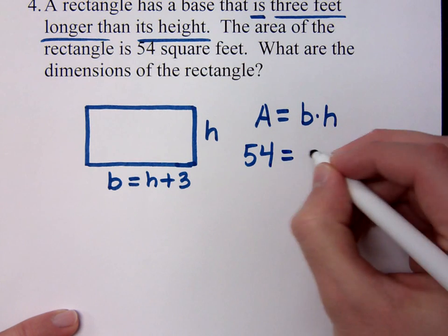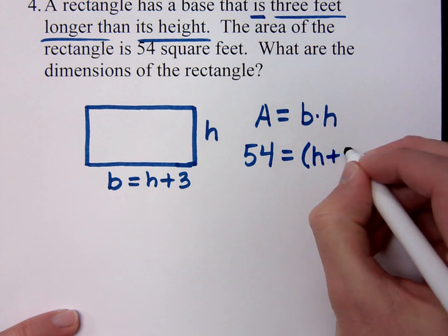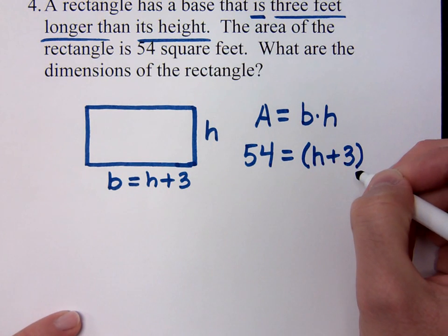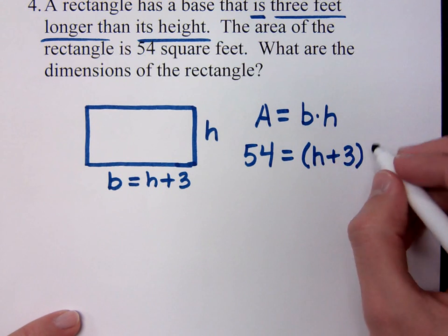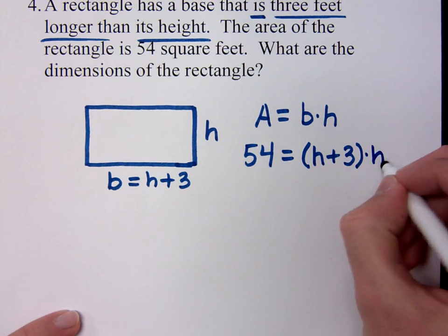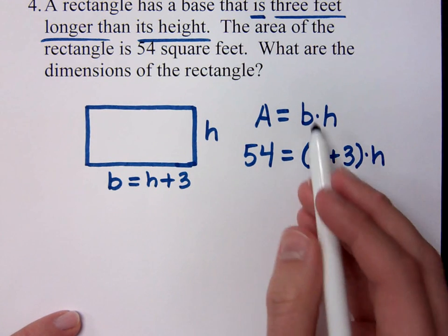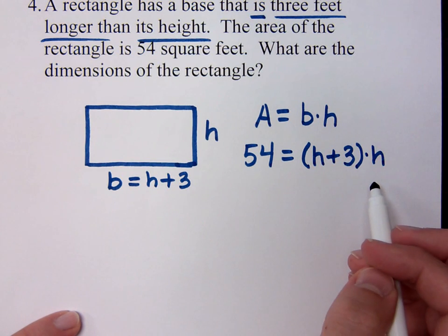How do I want to represent my base? But I don't want to have two different variables. I want to have it as one single variable. And I already said that my base was the same as H plus three, right? Remember, the guy that I know absolutely nothing about in this problem is my H. It's my height. So my area was 54 square feet. My base is the height plus three. I've got an equation here for me to solve. So what's going to be my next step?